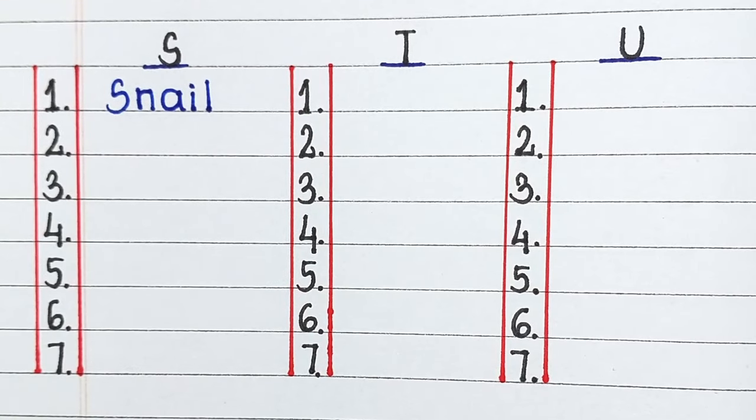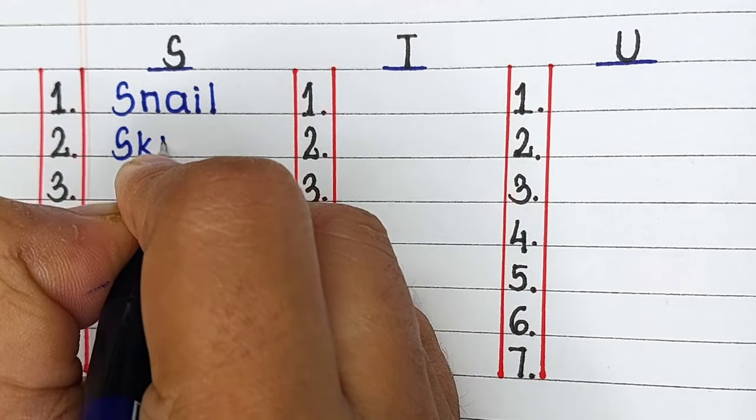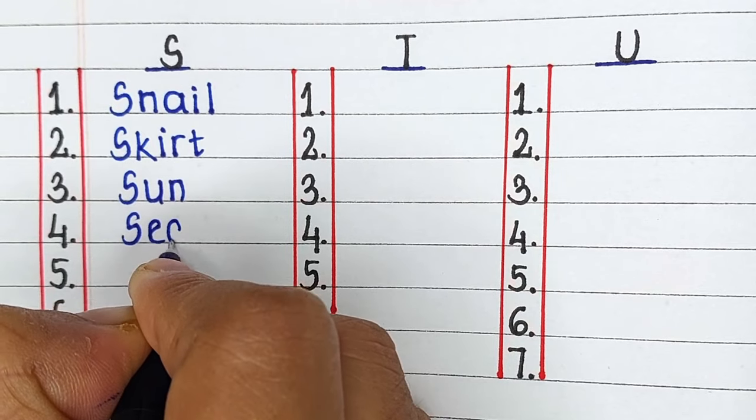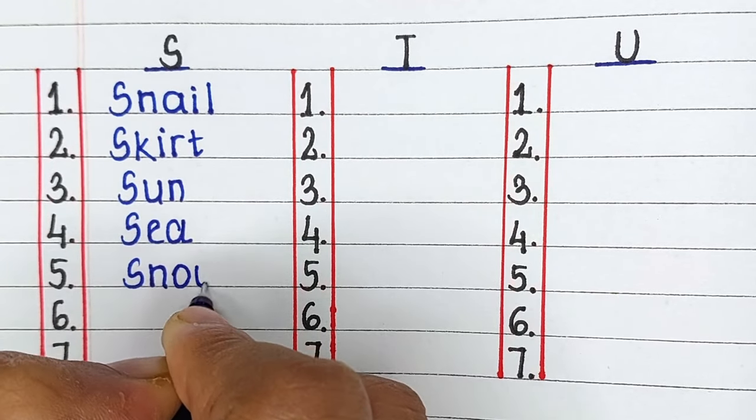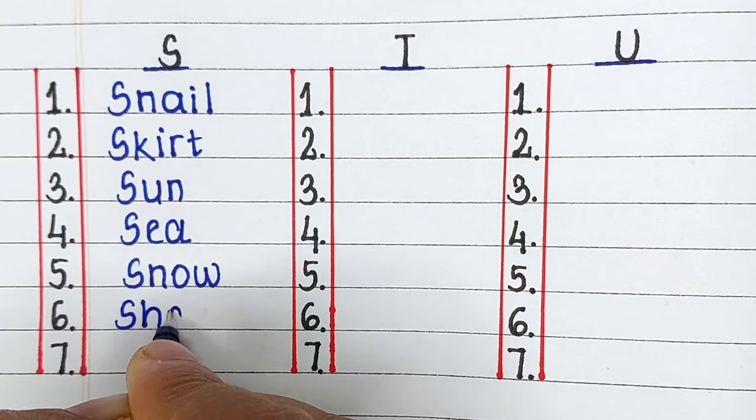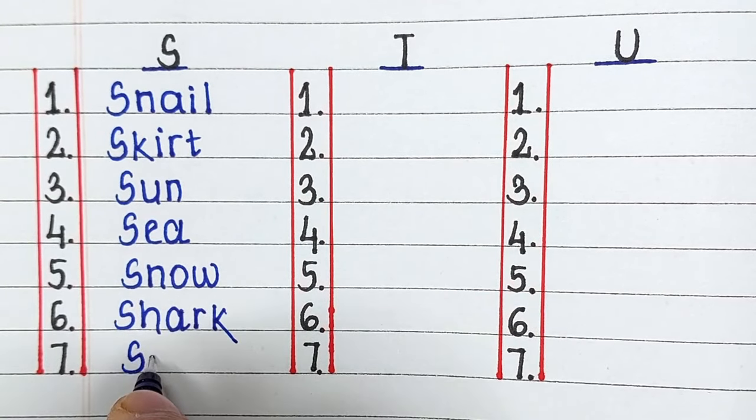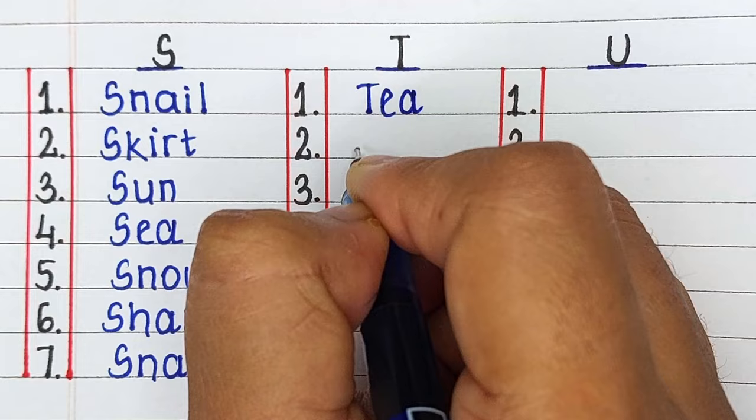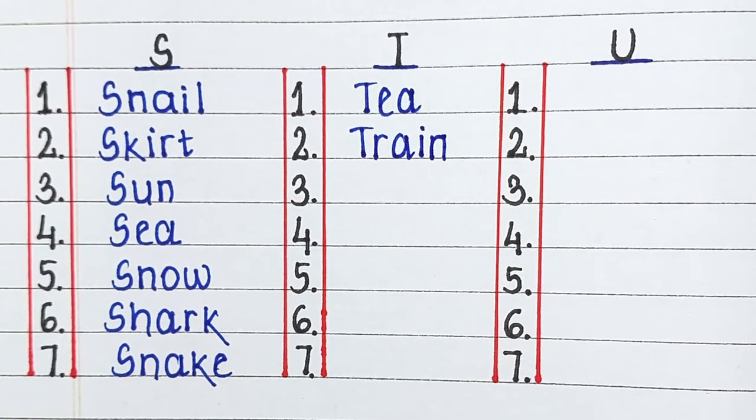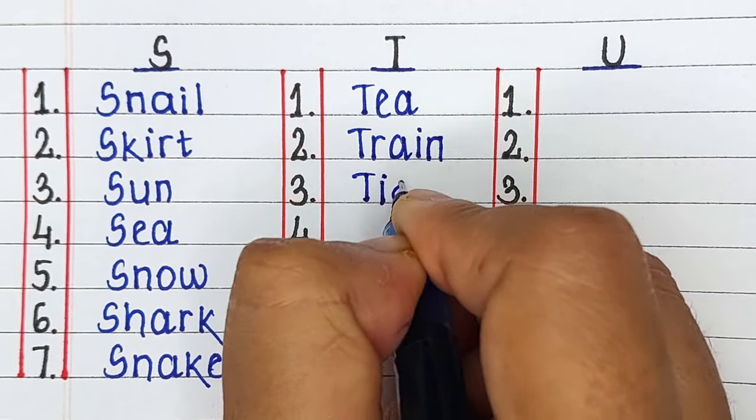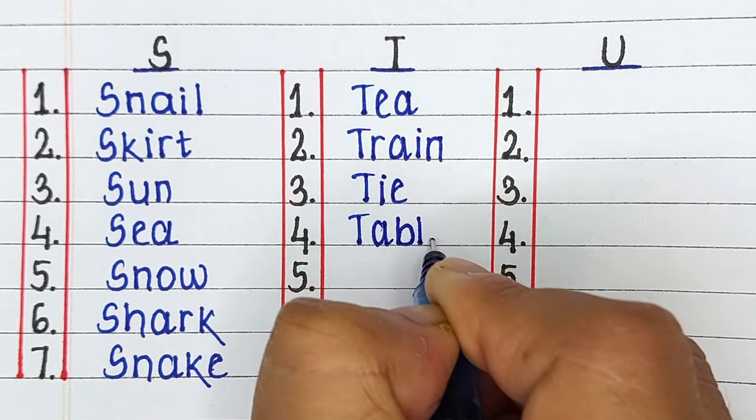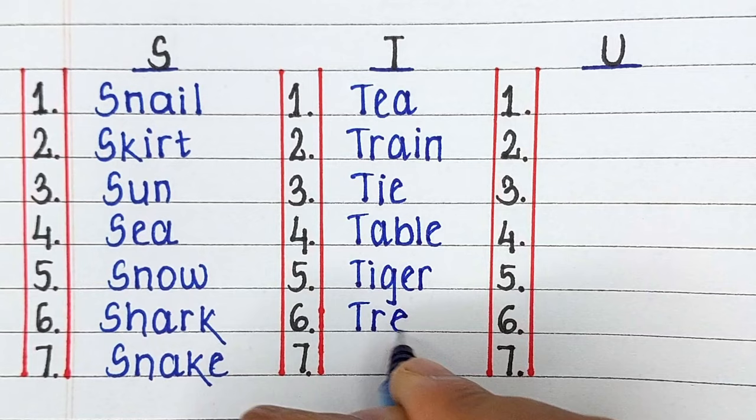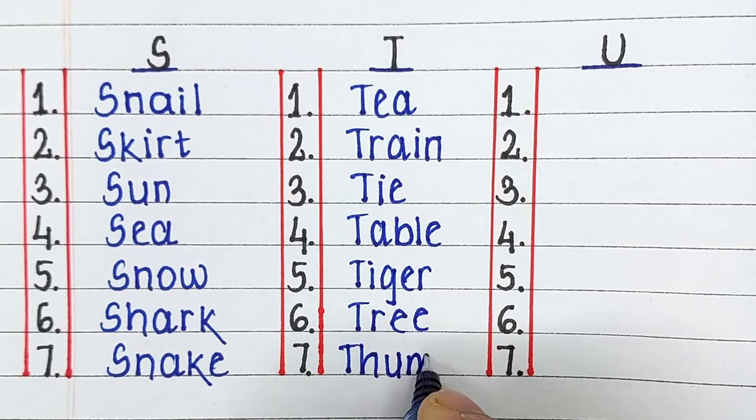Next up we have Alphabet S. The words starting from letter S are Snail, Skirt, Sun, Sea, Snow, Shark and Snake. Next up we have Alphabet T. The words starting from letter T are Tea, Train, Tie, Table, Tiger, Tree and Thumb.